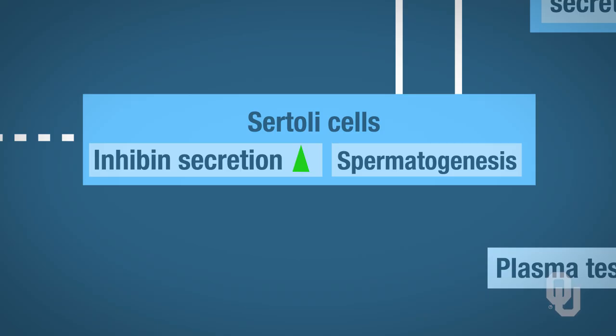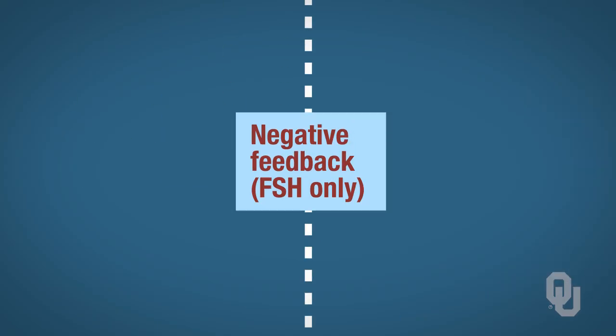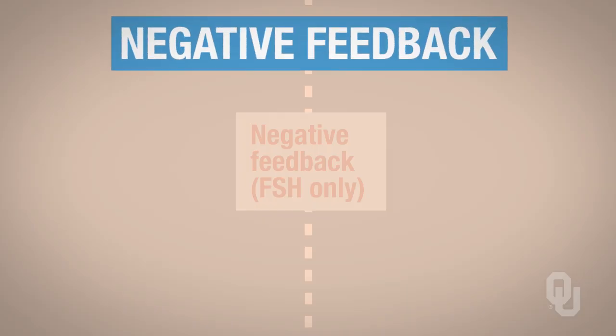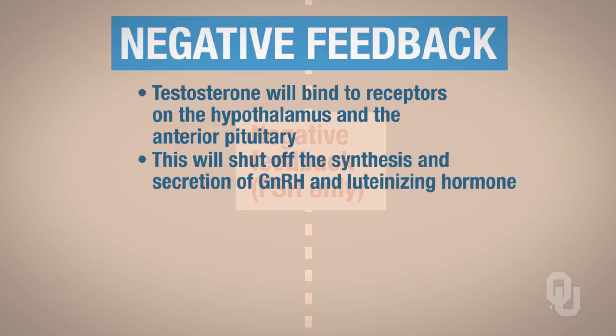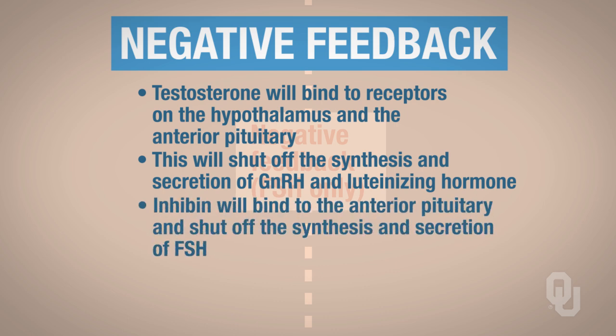Since we are talking about inhibin, this is a good time to talk about how to shut down the system. You are already familiar with negative feedback using testosterone. Testosterone will bind to receptors on the hypothalamus and the anterior pituitary, shutting off the synthesis and secretion of FSH and LH. Inhibin will bind to the anterior pituitary and shut off the synthesis and secretion of FSH.